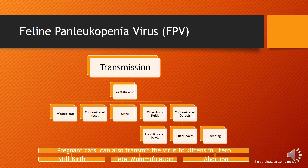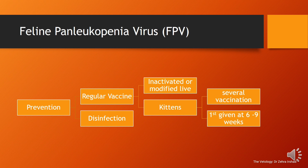If a cat catches the virus in early pregnancy, it can result in stillbirth, fetal mummification, and abortion. If infection occurs in late pregnancy, the virus can be transmitted to the kitten, and the born kitten will exhibit cerebellar ataxia and hypoplasia, showing signs of tremors and loss of coordination.